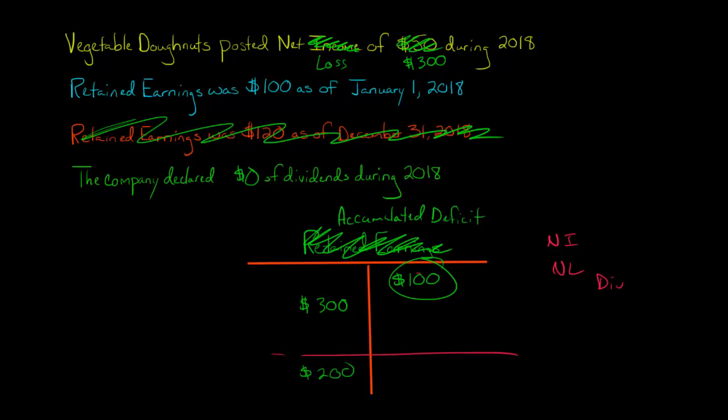If you see that for a company, sometimes with like startups and stuff, you'll see accumulated deficit. What that means is the company has accumulated more losses than it has profits, and we see that that makes sense here. They posted a net loss, and they had started with retained earnings of $100. So now at the beginning of next period, instead of saying we've got retained earnings of X, it'll say at the beginning, they have an accumulated deficit of $200.